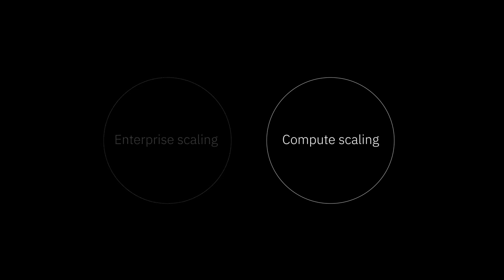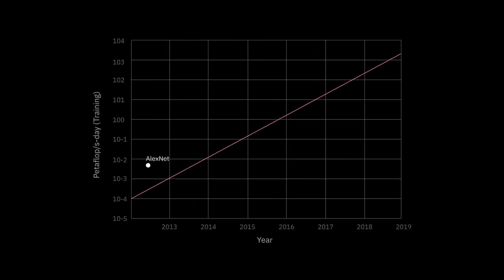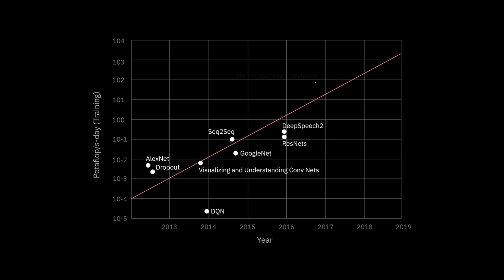Beyond enterprise scaling, there is the challenge of scaling compute. The compute requirements for the biggest AI models today are doubling every three and a half months. While these models are being created for beating benchmarks and the average enterprise use case won't directly use them, this trajectory illustrates that we will need to address compute challenges to drive AI adoption at scale. Addressing this will require us to go beyond today's CPUs and GPUs and create hardware that is purpose-built for the AI workloads of the future.